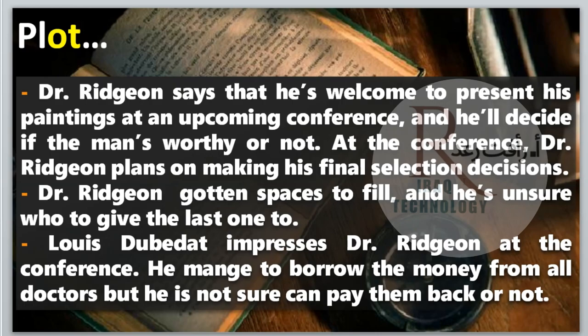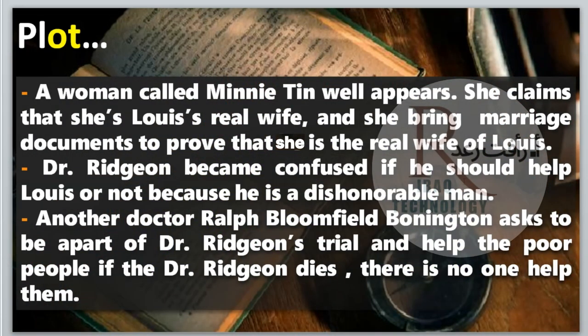At the conference, Doctor Ridgeon plans to make his final selection decisions. Doctor Ridgeon has spaces to fill and is unsure who to give the last one to. Louis Dubedat impresses Doctor Ridgeon at the conference. He managed to borrow money from all the doctors, but it's unclear whether he can pay them back. A woman called Minnie Tenwell appears and claims to be Louis's real wife, bringing marriage documents to prove it. Doctor Ridgeon becomes confused about whether he should help Louis, as Louis is a dishonorable man.